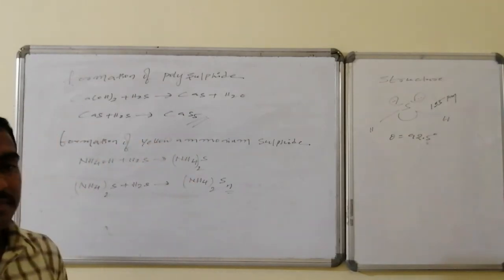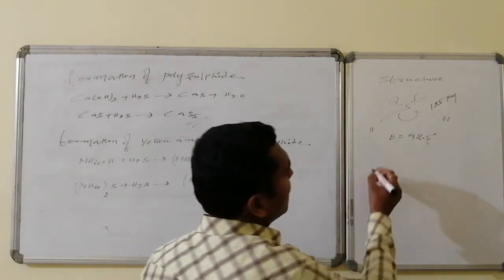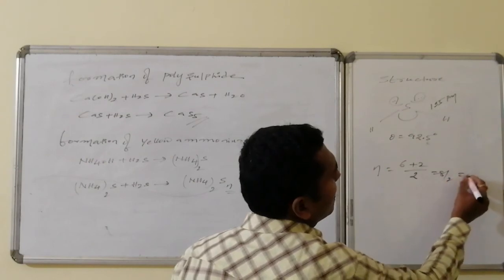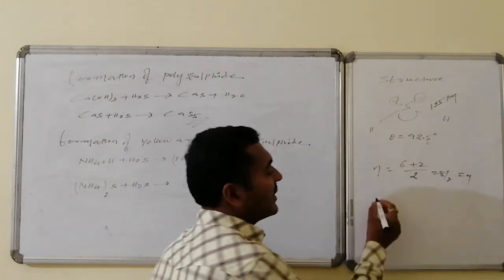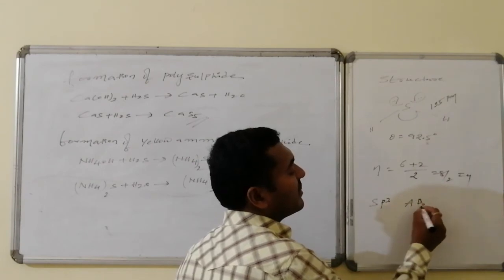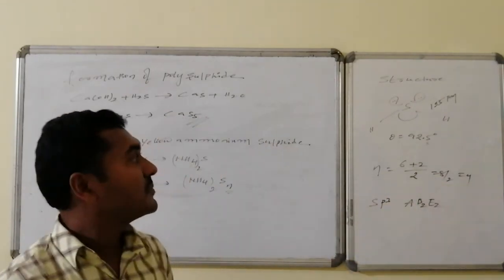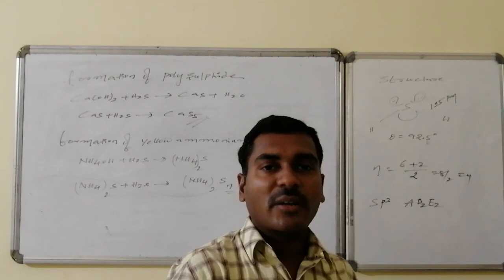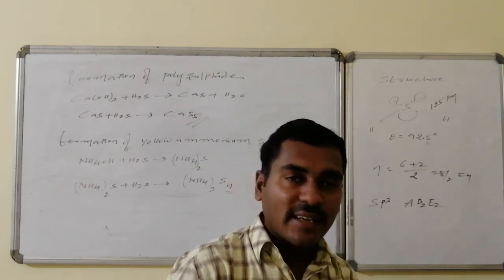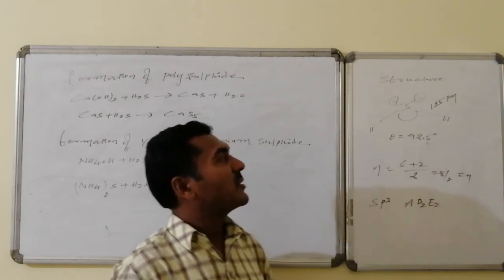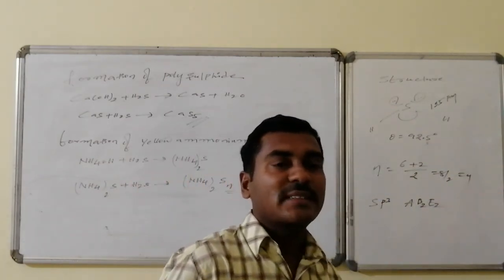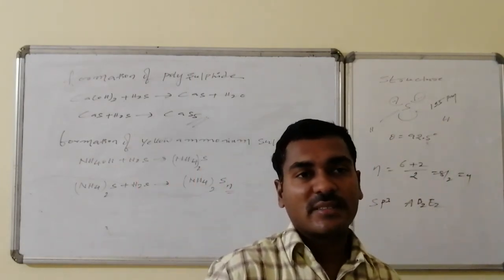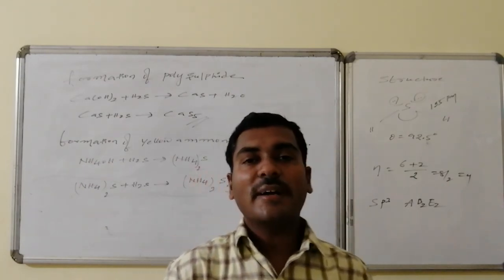The structure of H₂S: hybridization is sp³ (calculated as 8÷2 = 4), belonging to the AB₂E₂ type with two bonding pairs and two lone pairs. The bond angle decreases significantly from the ideal tetrahedral 109°, and even from water's 107°, to 92.5° in H₂S. The S–H bond length is 135 picometers, based on the sizes of sulfur and hydrogen atoms.